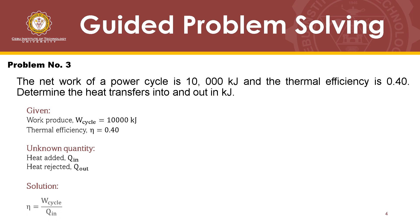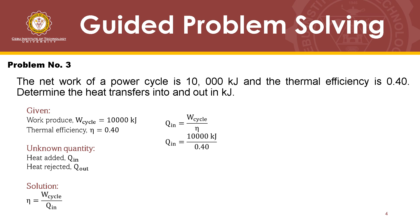Our solution is based on the equation for thermal efficiency: work cycle divided by Q_in. Rearranging, we can get the value of Q_in. Substituting the values from the given, we get the heat added, or Q_in, as 25,000 kilojoules. Therefore, the heat transfer into the power cycle is 25,000 kilojoules.